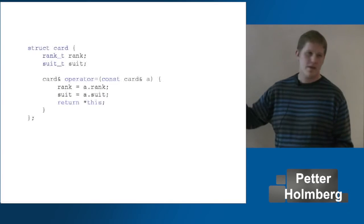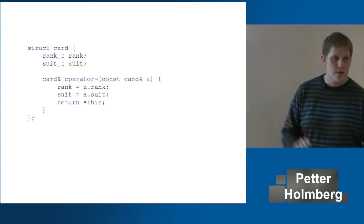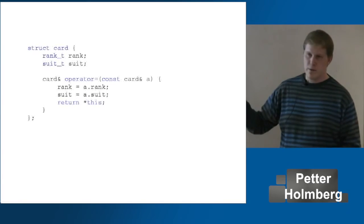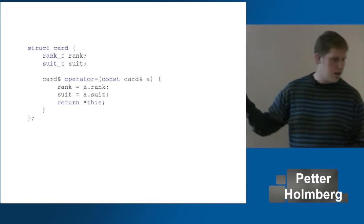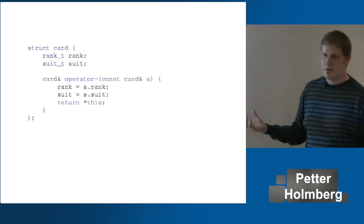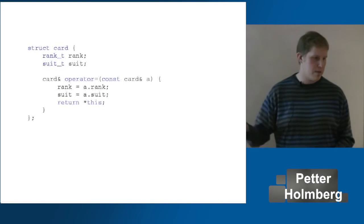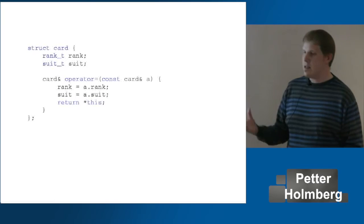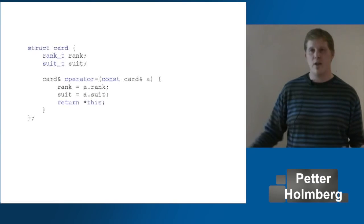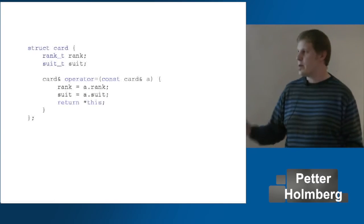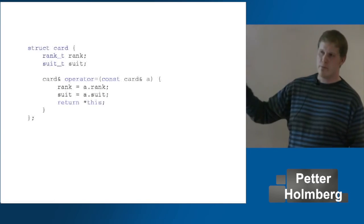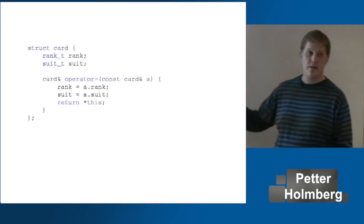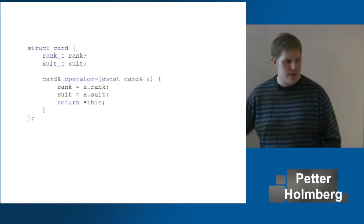So we need a copy assignment operator. In this case, it's very trivial — we just copy assign the members and return a reference to the object itself. In this particular case I wouldn't need to implement this, because this is what the compiler would give me for free if I don't implement it. I'm only showing this for demonstration. But this is an operation on the type, so we can describe it using a concept.